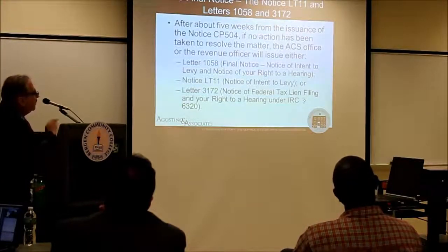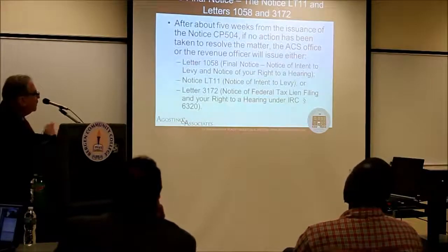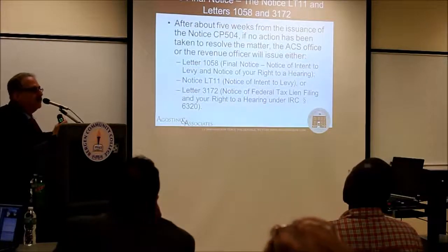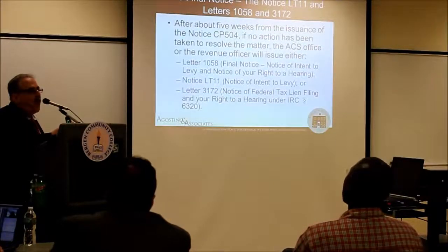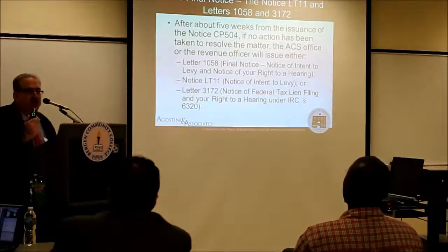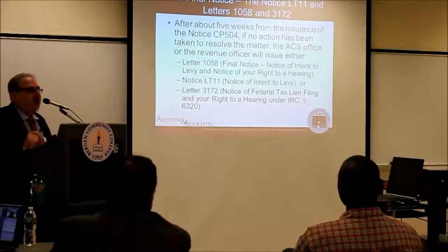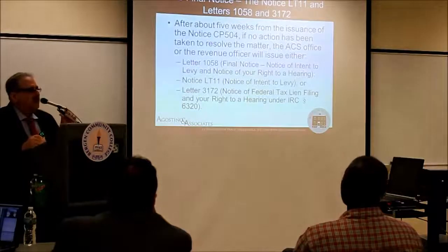The Form 1058 — your final notice — and the LT11 are similar. The Form 3172 means: we've filed the federal tax lien. In order to get it withdrawn or released, you'll have to go through the CDP procedures. Your taxpayer is starting to feel strangled — they're calling every other week asking when the lien is going away, saying they can't borrow for their business, can't earn money, can't buy a car, can't rent.